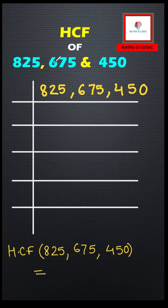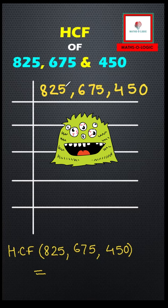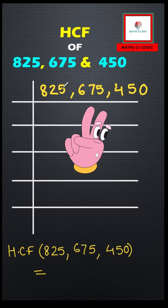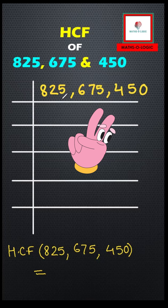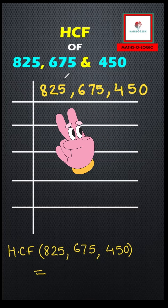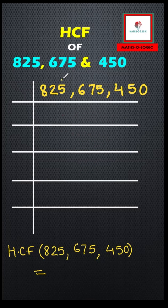Let's find the HCF of 825, 675, and 450. This seems quite complicated, but let's see how we can make it very easy. First of all, I'm going to observe the last digit of the three numbers — that is 5, 5, and 0.